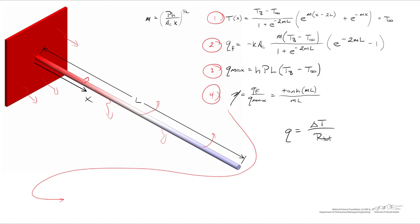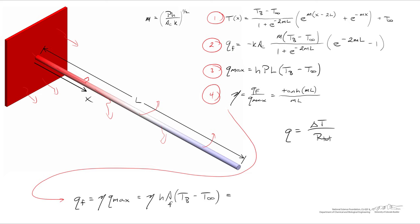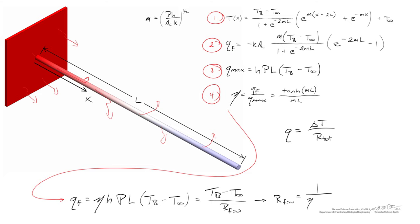To handle this, we work with the thermal efficiency. We can say that the heat being removed from the fin equals the fin's efficiency multiplied by the theoretical maximum rate of heat transfer from the fin. That maximum equals H times the fin area times (T_base minus T_infinity), where the area equals the perimeter times the length. We can also write this as the driving force (T_b minus T_infinity) divided by the resistance of the fin, giving us: R_fin equals one over (eta times h times P times L), which is just one over (eta times h times A_fin).